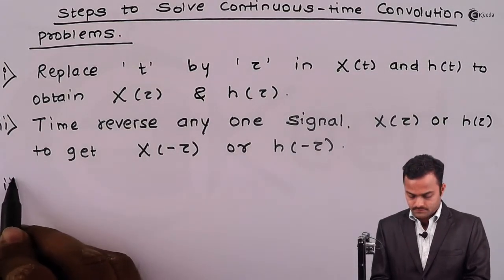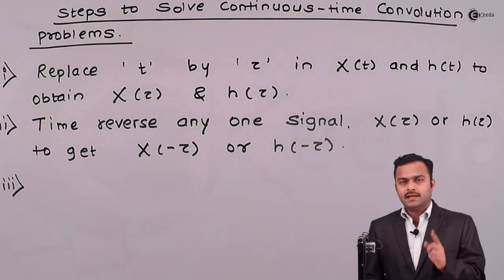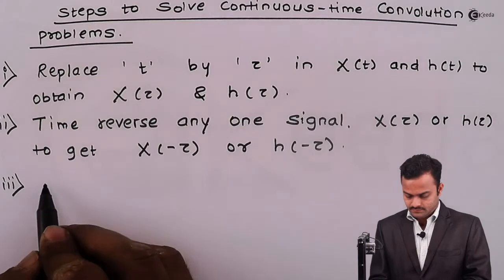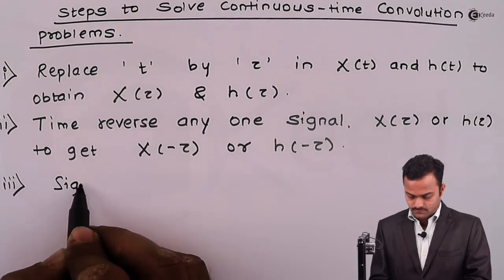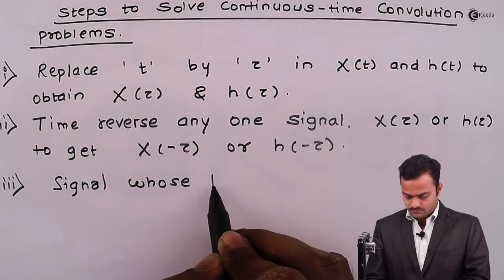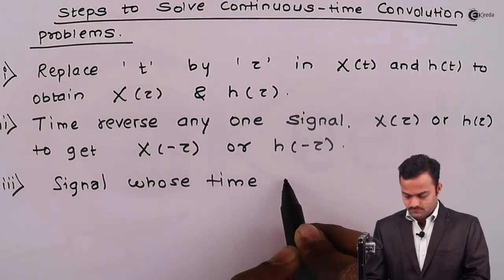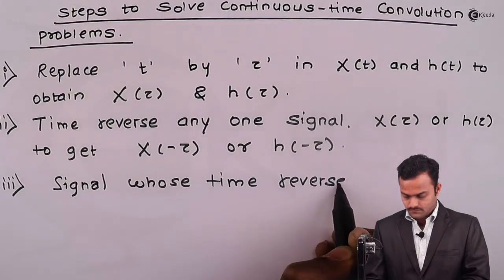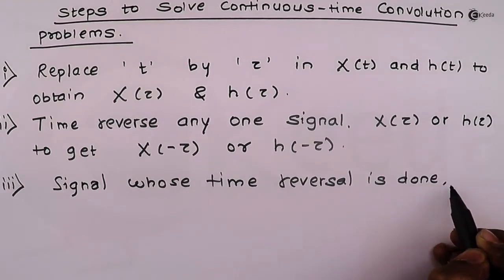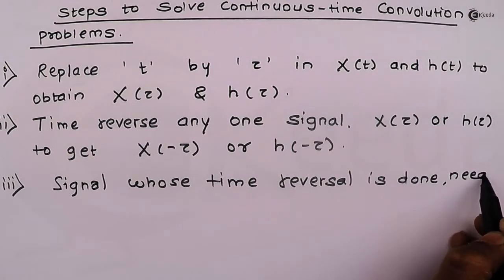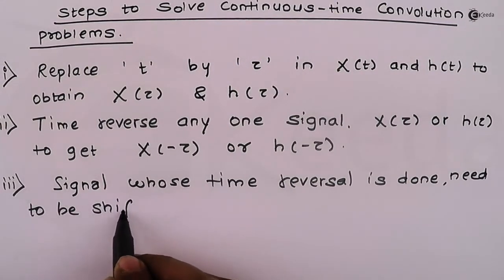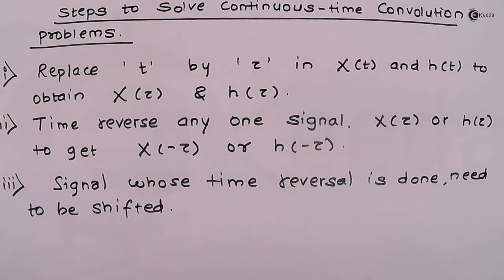Third step, the signal which you have reversed, that signal needs to be shifted. So, this shifting can occur in two ways and this to be shifted by amount t.